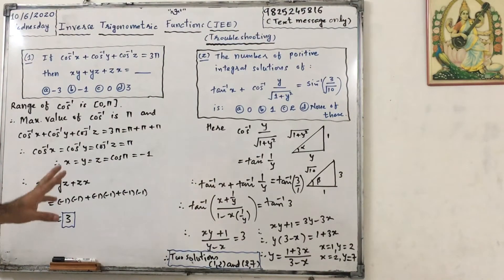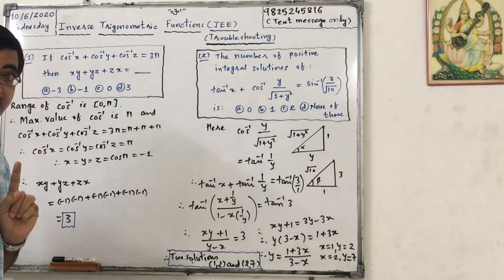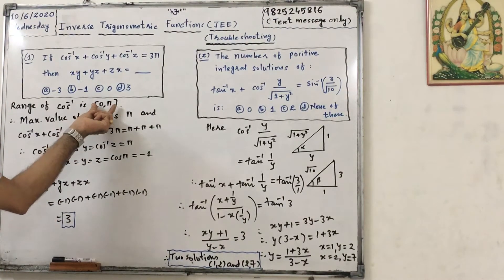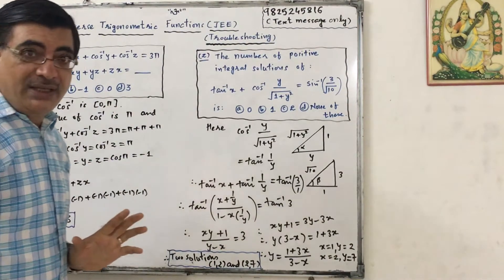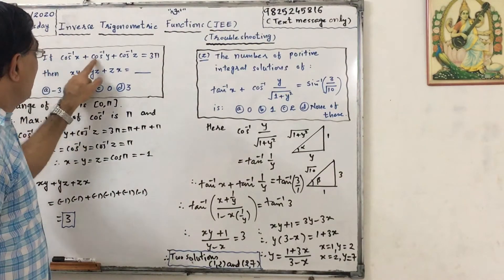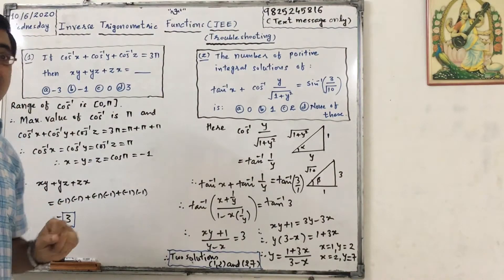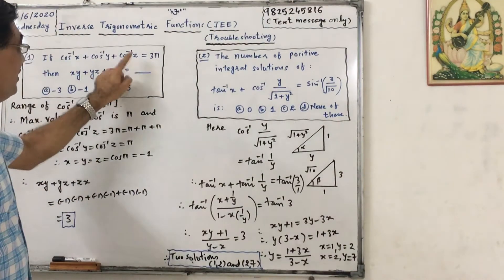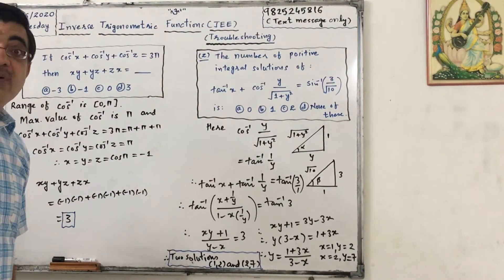Now first of all see what is range of cos inverse. It is closed interval 0 to pi. So the maximum value of cos inverse is pi and the sum has value 3 pi. That means each term must be having value of pi.